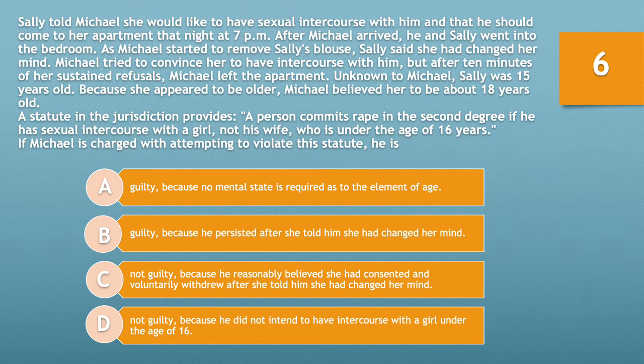A statute in the jurisdiction provides a person commits rape in the second degree if he has sexual intercourse with a girl, not his wife, who is under the age of 16 years. If Michael is charged with attempting to violate this statute, he is: A, guilty because no mental state is required as to age; B, guilty because he persisted after she changed her mind; C, not guilty because he reasonably believed she consented and voluntarily withdrew; or D, not guilty because he did not intend to have intercourse with a girl under the age of 16. Take ten seconds.